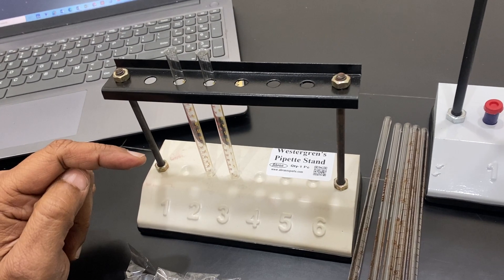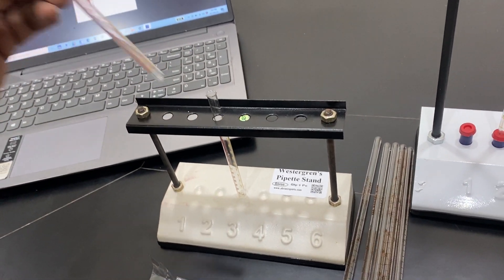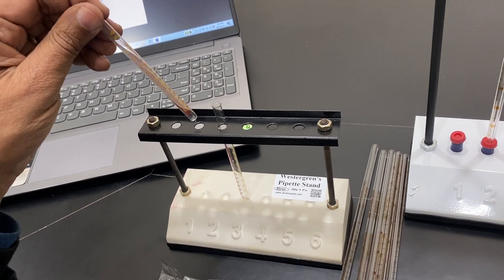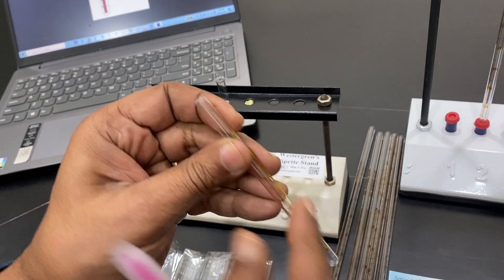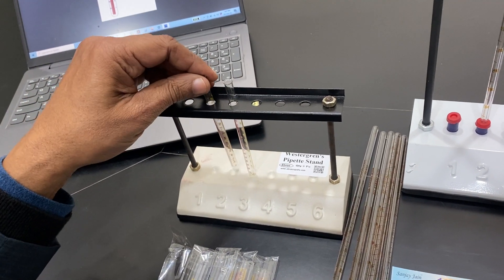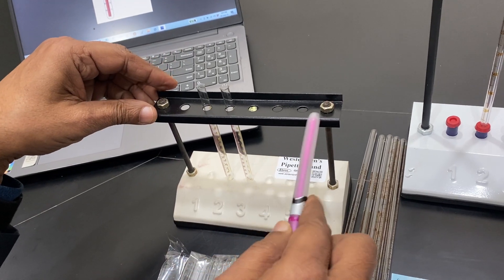This is a pipette stand or Windrope tube stand. Its capacity is again six tubes. Here, the tube is bottom-closed and open from the top. Six tubes can be put in this stand.